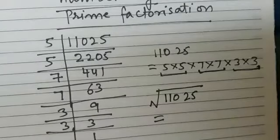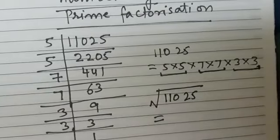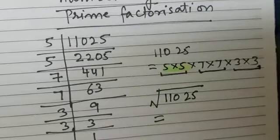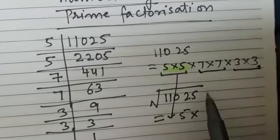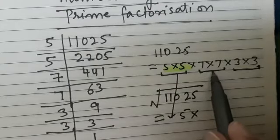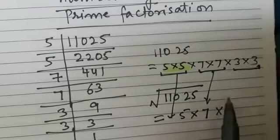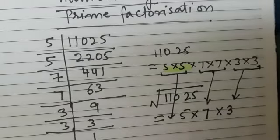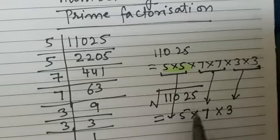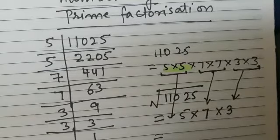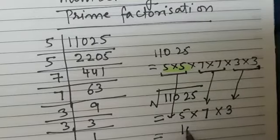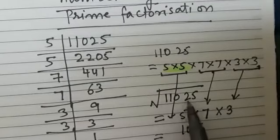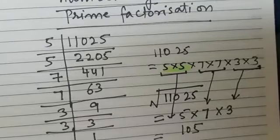What you have to do is take one factor from each pair and then find their product. The first pair is 5 × 5, so we take one 5; the second pair is 7 × 7, so we take one 7; the third pair is 3 × 3, so we take one 3. The product 5 × 7 × 3 is 105, so the square root of 11,025 is 105.